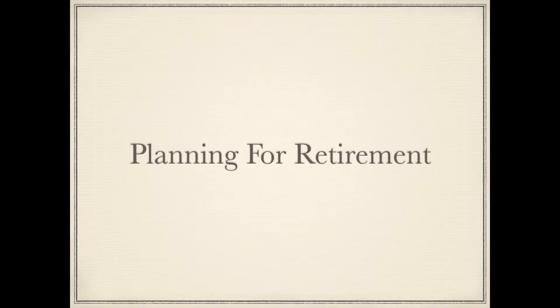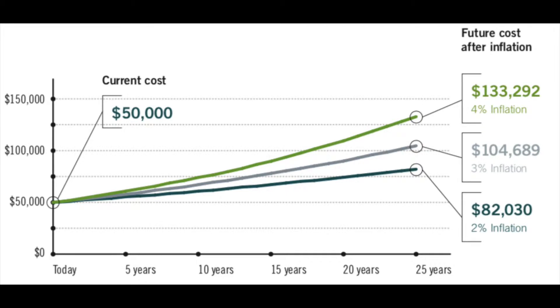With the average life expectancy growing each and every decade, and the average retirement age dropping, it's important to plan for sustainable retirement income for north of 30 years. Another factor to consider is inflation. Simply having a savings plan or investing in fixed income securities or bonds is not a sustainable income anymore. It's important to include investments with income growth potential in your portfolio that will at least keep up with inflation. A well-rounded retirement income plan balances guaranteed income sources with investments that provide growth potential.